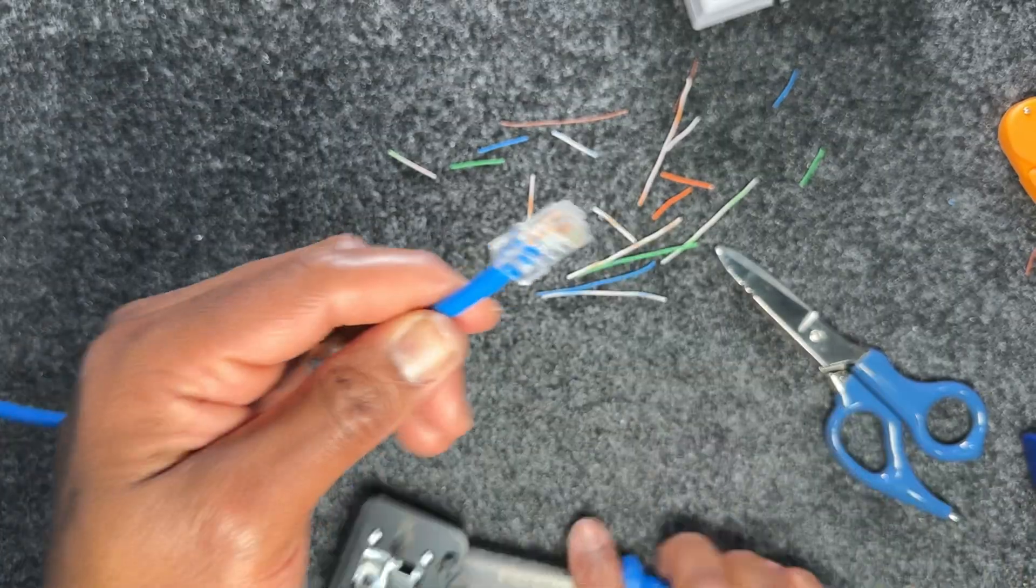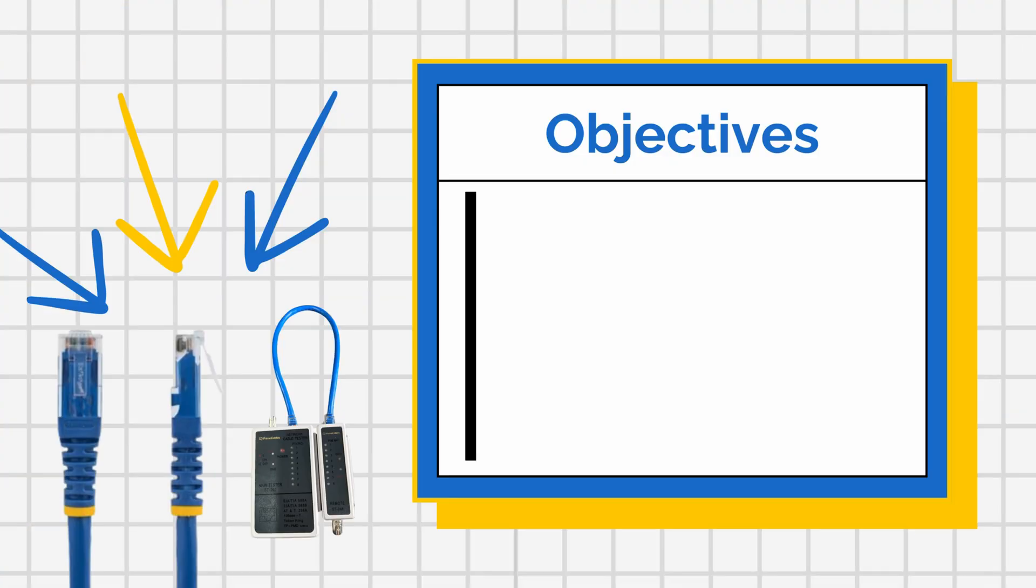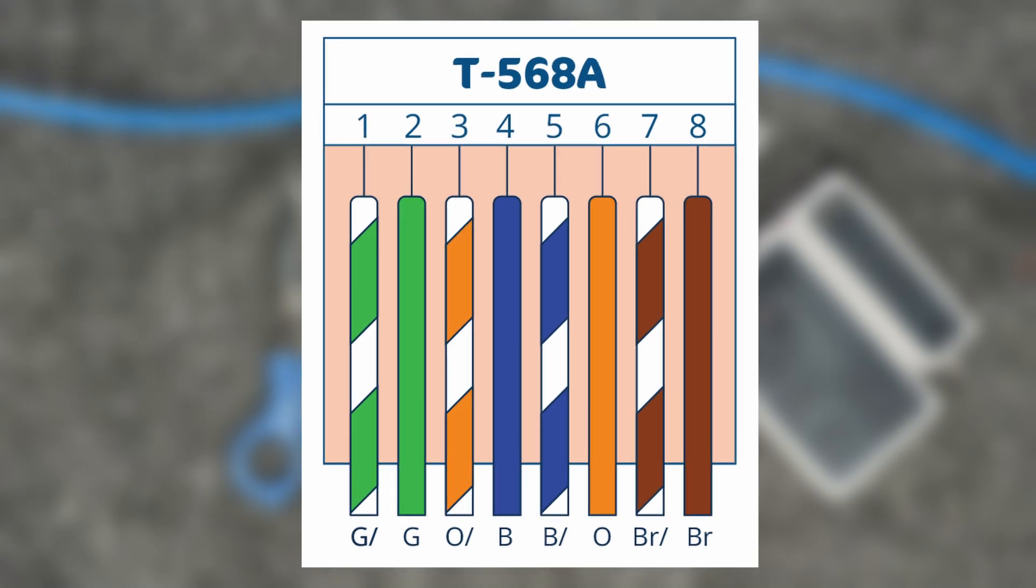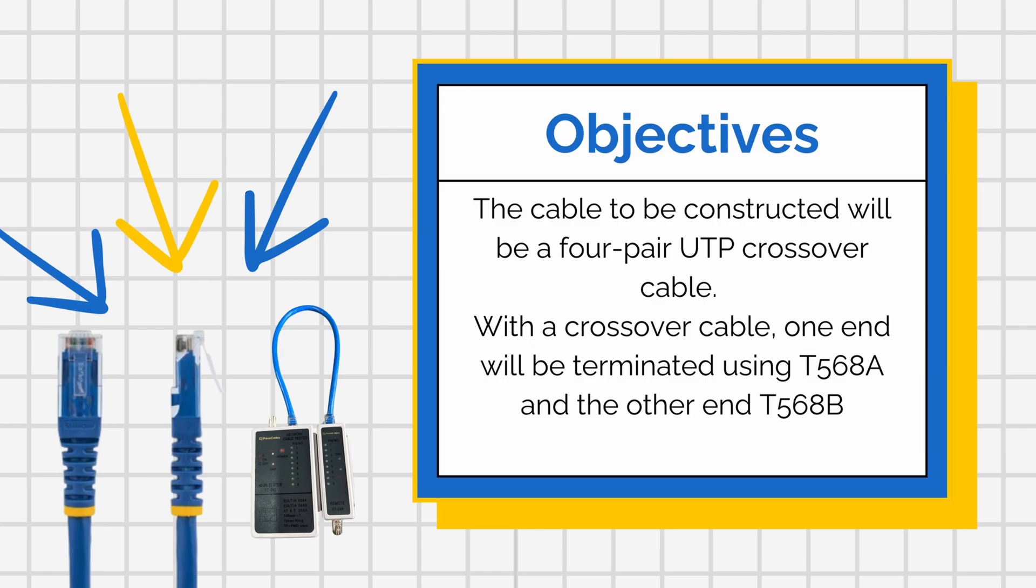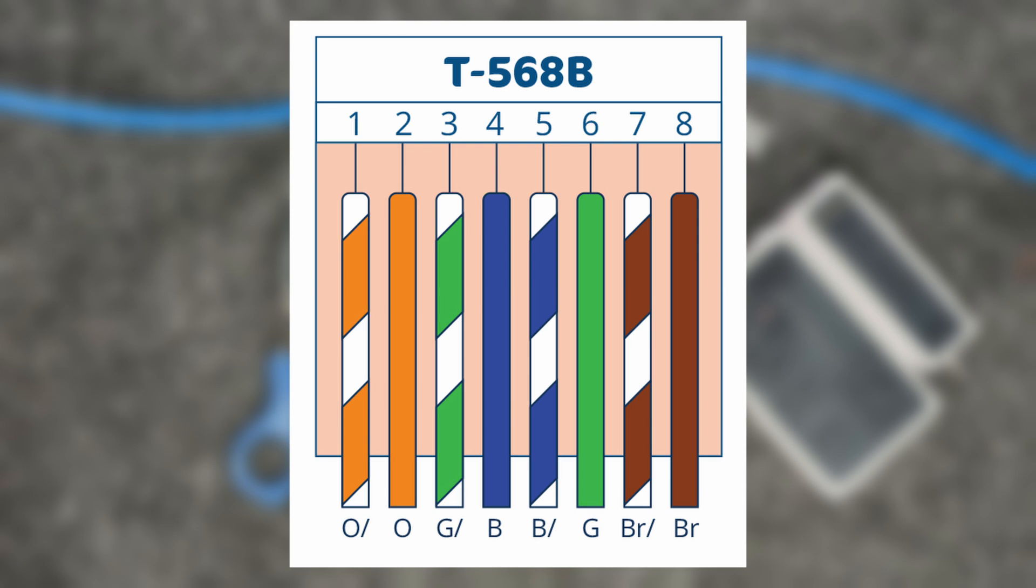In this lab, we're going to be learning how to create our own custom crossover cables. The objective is to construct a cable using four-pair unshielded twisted pair, terminating one side using the 568A wiring scheme and the opposite side using the 568B wiring scheme.